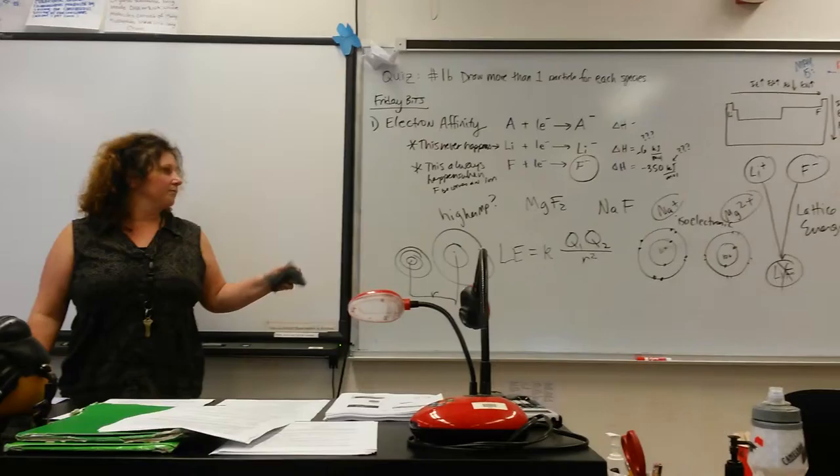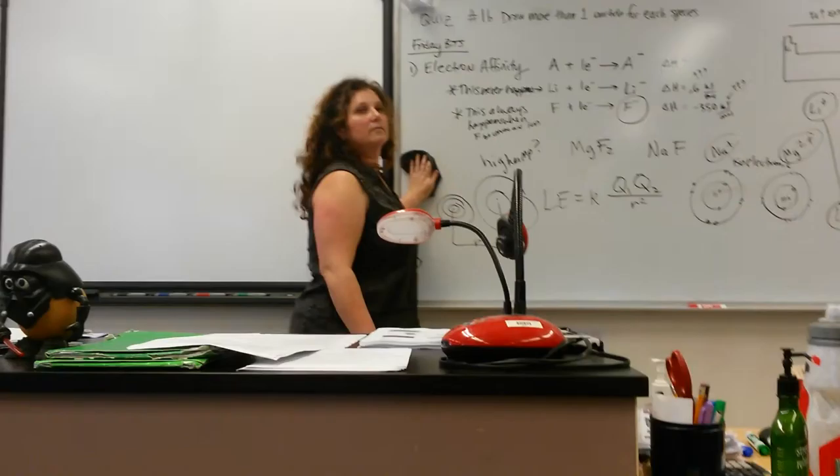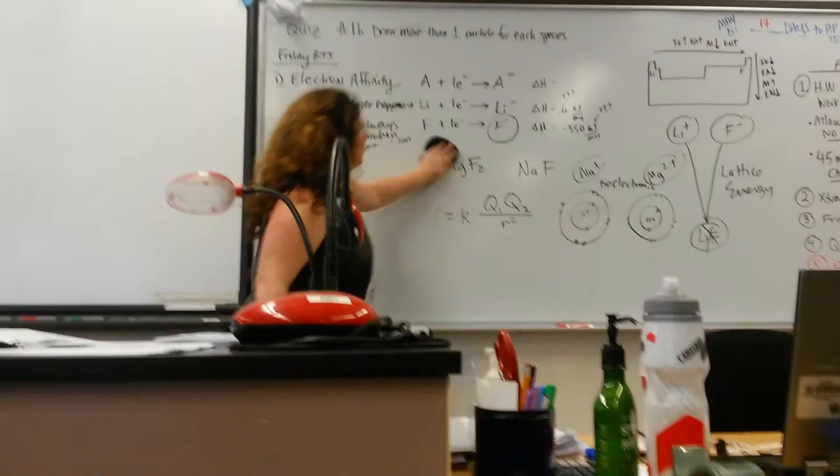So basically it's saying that with a lower radius and a higher charge, they're more likely to trap? Correct. And they have a higher melting point as a result.